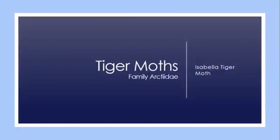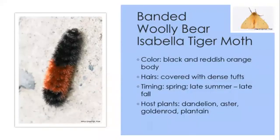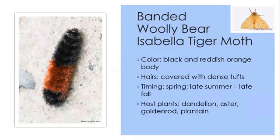Our last group of moths are the tiger moths, whose caterpillars are often called woolly bears due to their dense clusters of hairs. The most popular is the Isabella tiger moth or banded woolly bear. This caterpillar is black with a reddish-orange band covered in dense tufts of hairs. As the caterpillar matures, the black hairs near the rear are replaced with orange hairs, so the band looks like it's expanding over the course of the season. You can find them in late summer through late fall, feeding on dandelions, plantains, asters, and goldenrods.